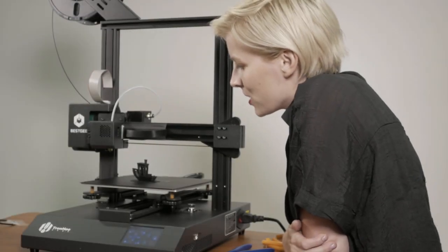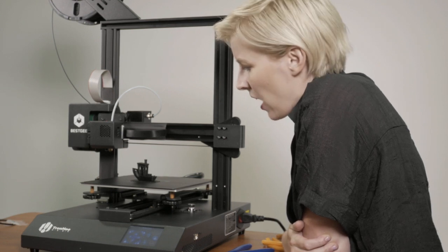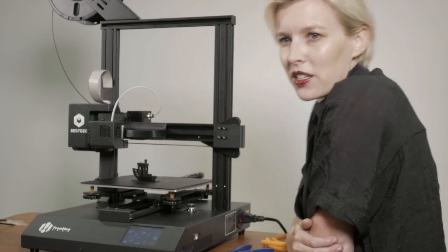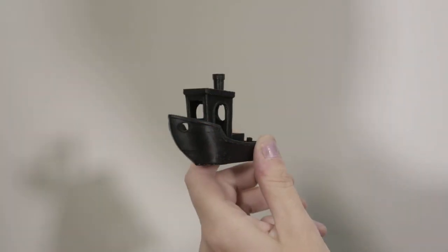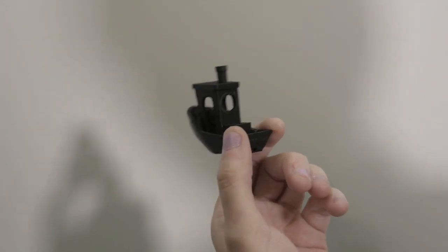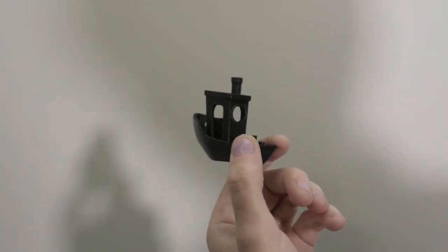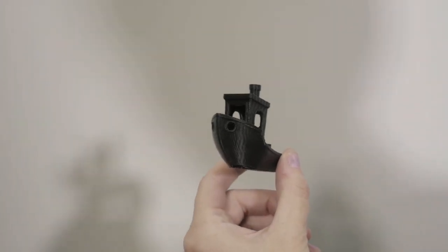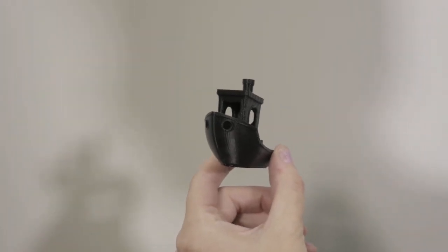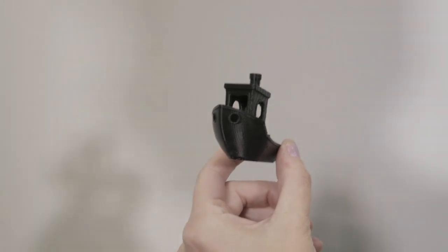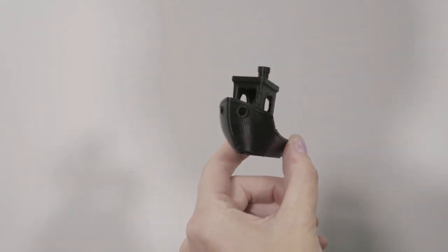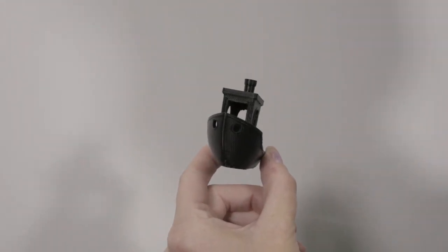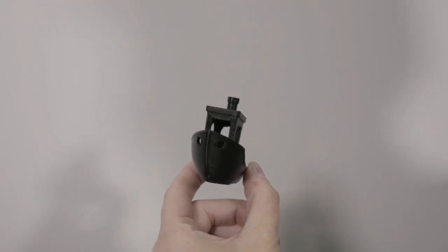All right, so our benchy is done. It took about an hour and a half to print. It looks pretty good. We're going to pop it off the print bed and then take a closer look. So this is the benchy. It turned out really good. The overhangs look good. I don't see any stringing. Like I said, I'm really impressed with this printer. For $250, it's solid. It's well made. It is quality. Like I said, it's quiet. It uses settings that you're already familiar with. I'm going to say this is a go.